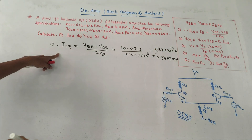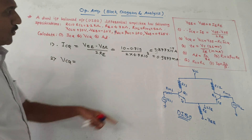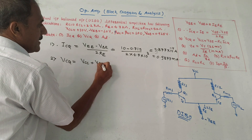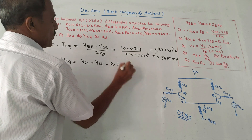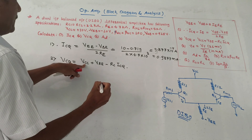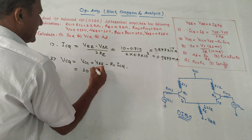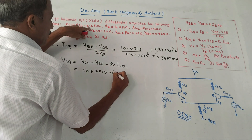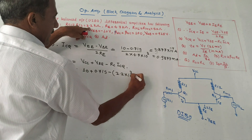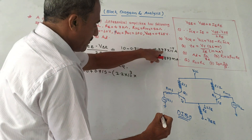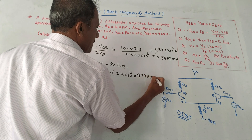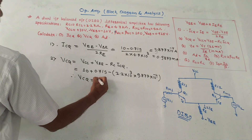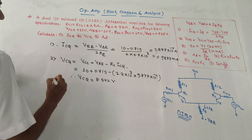Second, calculate VCQ. Using the ready-made formula: VCQ = VCC + VBE − RC × ICQ. Substituting: VCC = 10, VBE = 0.715, RC = 2.2 × 10³ Ω, ICQ = 0.9877 mA. Solving gives VCQ = 8.542 V.